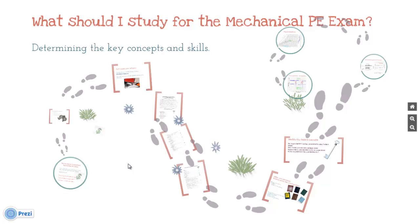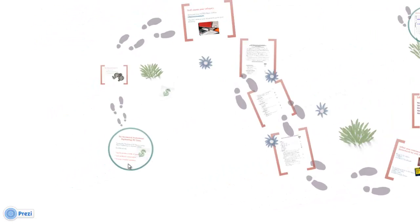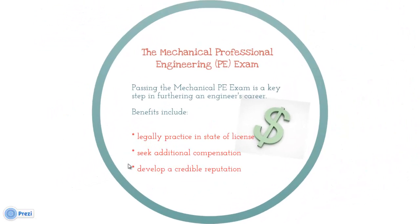The Professional Engineering License is one of the most important steps in an engineer's career. It allows the individual to legally practice engineering in their state. This credential can also help the engineer to obtain higher compensation and provide the first step in developing a credible reputation.